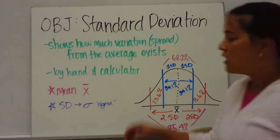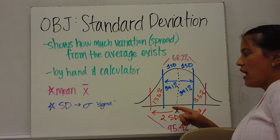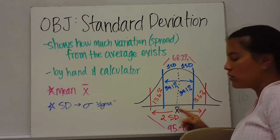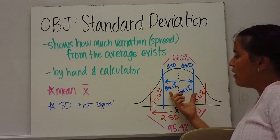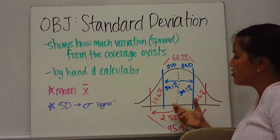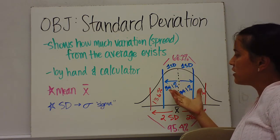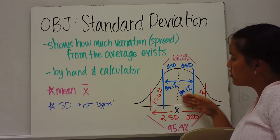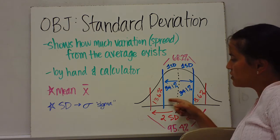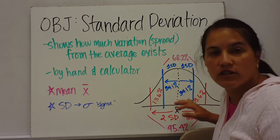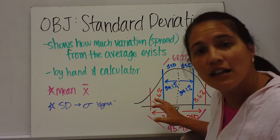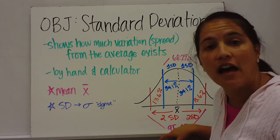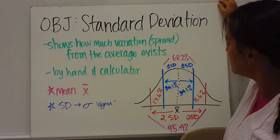This graph shows the standard deviation. The black line in the middle is the mean in a bell curve. One standard deviation below and above the mean encompasses 68.2% of the data — 34.1% on each side. Two standard deviations out on each side covers 95.4% of the data. This is why standard deviation is used in statistics: to show how far data is spread out.